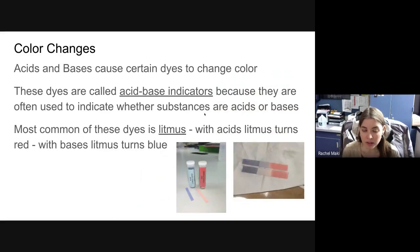As you have already noticed in the labs, acids and bases can cause certain dyes to change color. Those dyes are called acid-base indicators. They're indicators because they actually indicate whether something is an acid or a base. We've used litmus paper in the lab, and you have noticed that acids, the litmus will turn red. Bases, it will turn more on the bluish side of things.